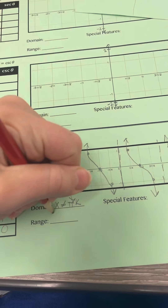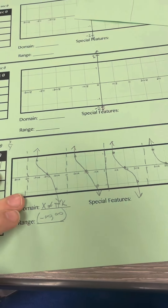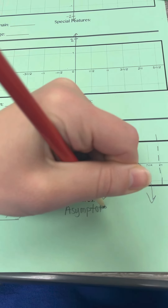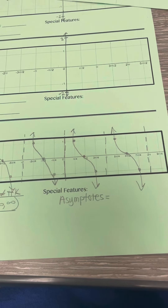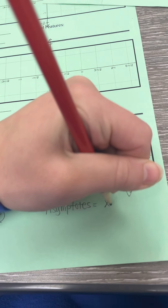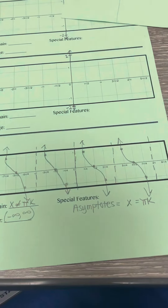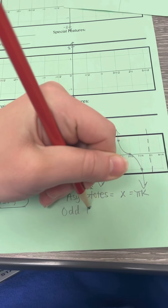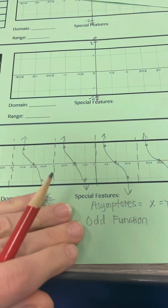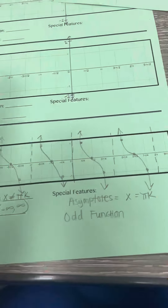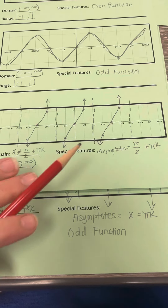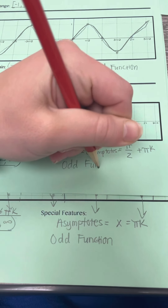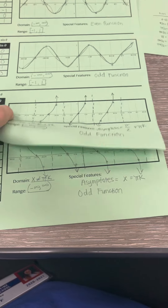Special features are again going to be asymptotes. I forgot to include the even and odd function, so I'm going to go back and add that to tangent as well as cotangent. Asymptotes are going to be just where the domain is — all x values that are pi times a constant. Cotangent is going to be an odd function because you can rotate it around the origin and it will be symmetrical — it's not something you can flip over. Tangent is also odd because you can rotate it around the origin. And that is tangent and cotangent.